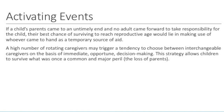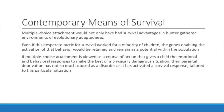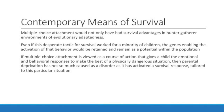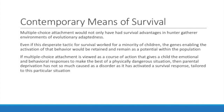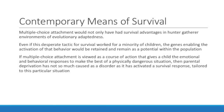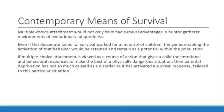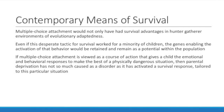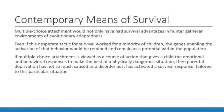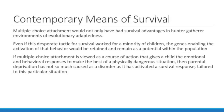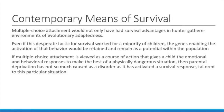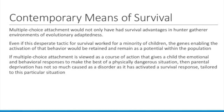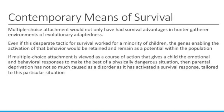Multiple-choice attachment would not only have had survival advantages in hunter-gatherer environments of evolutionary adaptedness. The practice of abandoning children, both babies and older children, was common even in the comparatively recent past. Diffusing the attachment system would enable an abandoned child to move among a pool of caregivers on a brief encounter basis. Even if this desperate tactic for survival worked for a minority of children, the genes enabling the activation of that behavior would be retained and remain as a potential within the population. If multiple-choice attachment is viewed as a course of action that gives a child the emotional and behavioral responses to make the best of a physically dangerous situation, then parental deprivation has not so much caused a disorder as it has activated a survival response tailored to this particular situation.